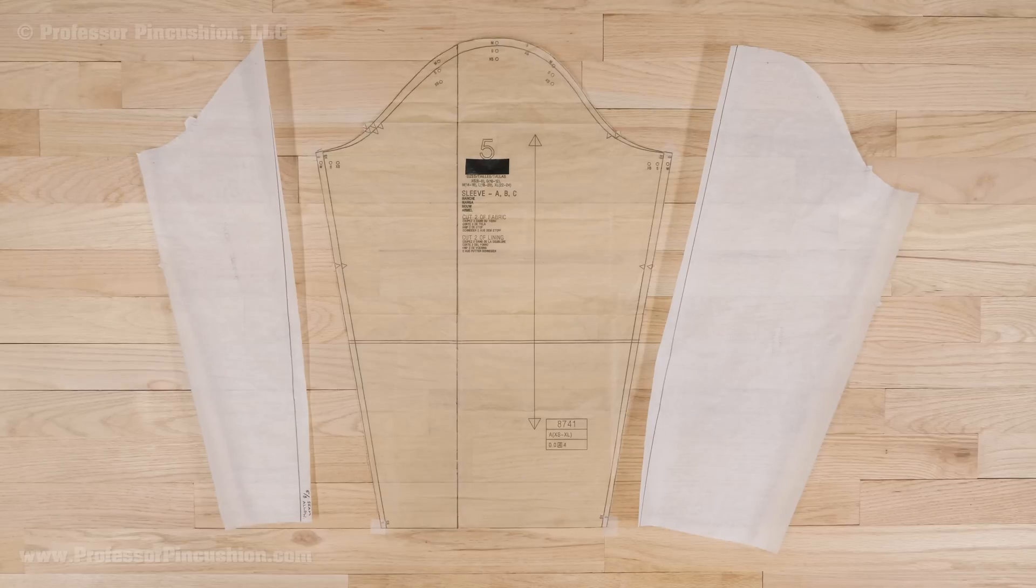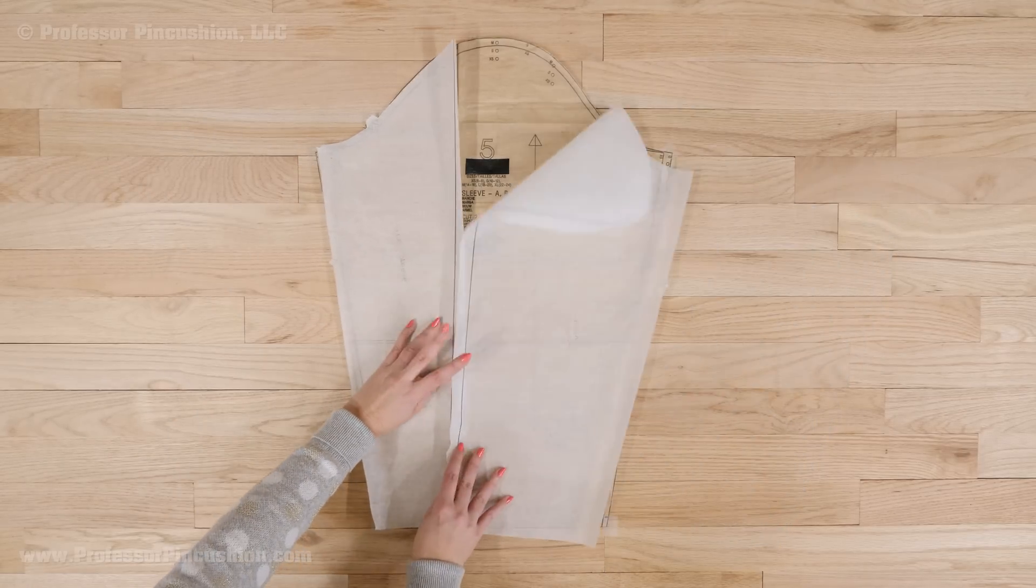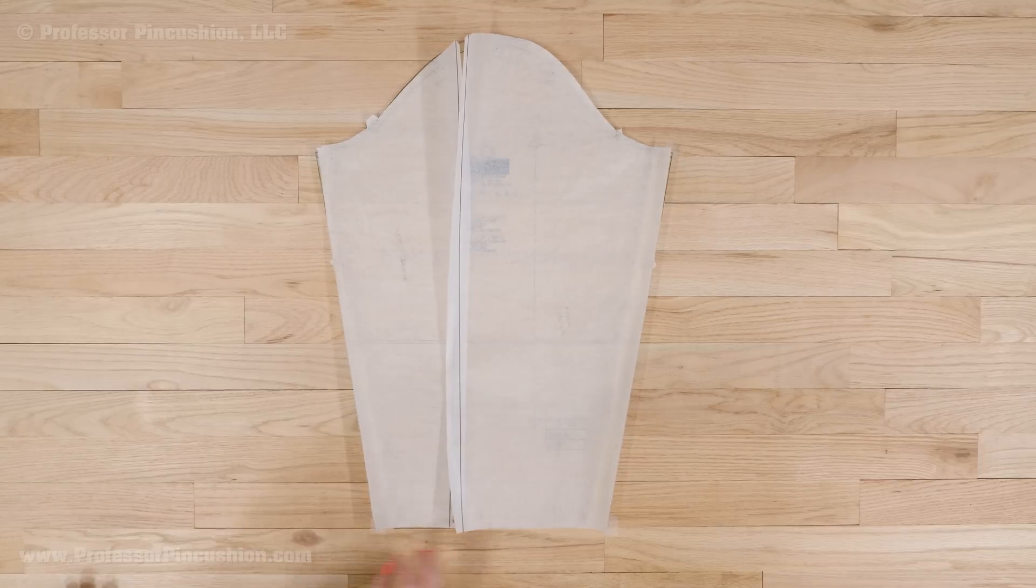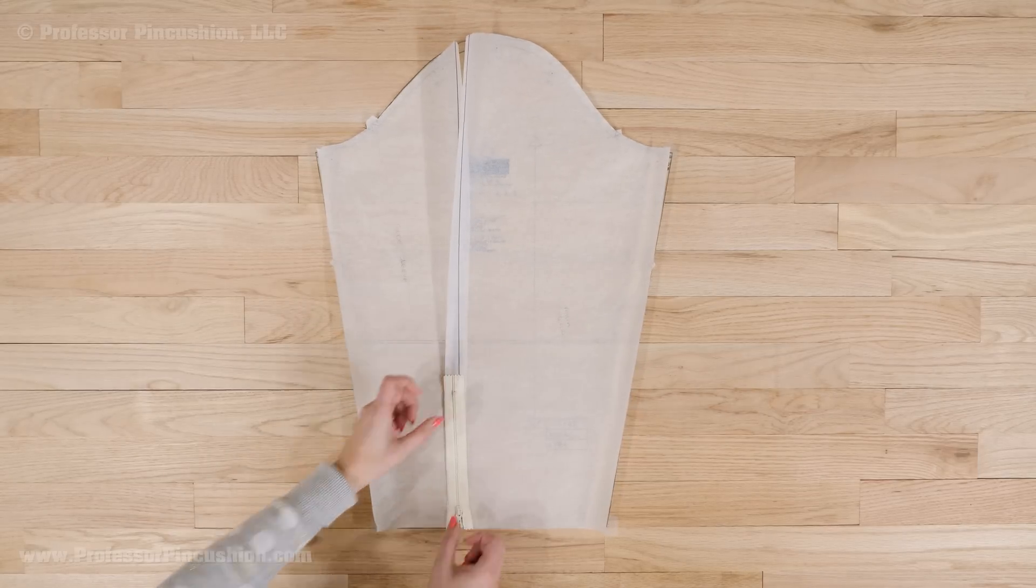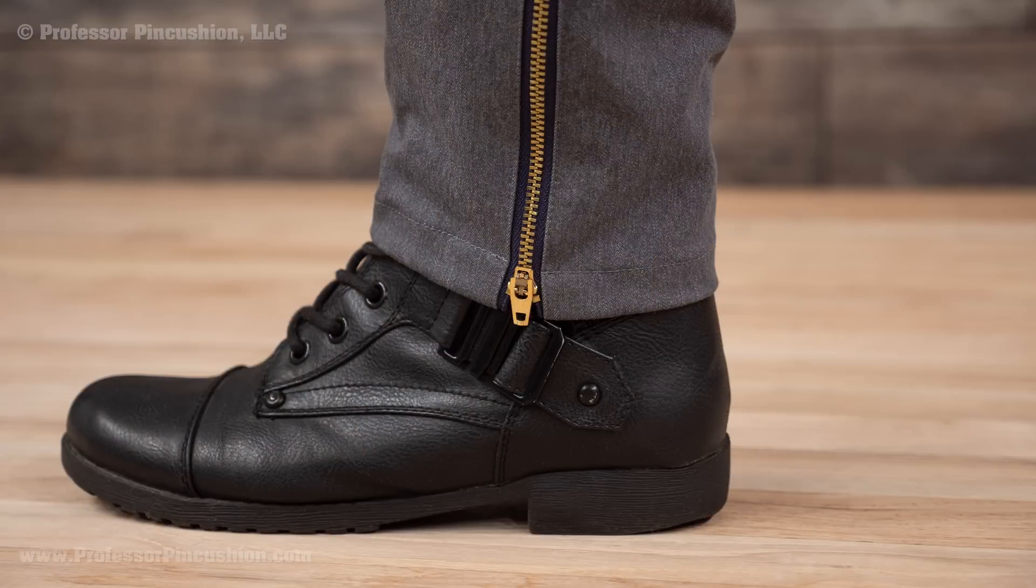Before we get started, a quick note. The zipper needs to be inserted into a seam. I'll show you how to do a pattern alteration next. If you want to put a zipper in a spot where there will already be a seam, like an outer leg seam on pants, you can skip the pattern alteration.